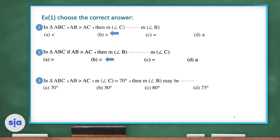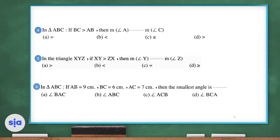Question 3: In triangle ABC, if AB is greater than AC and the measure of angle C is 70 degrees, then the measure of angle B may be 50, which is less than angle C which is 70 degrees.